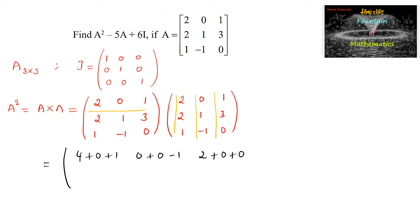Second row with first column: 2×2 + 1×2 + 3×1 = 4+2+3 = 9. Second row with second column: 2×0 + 1×1 + 3×(−1) = 0+1−3 = −2. Second row with third column: 2×1 + 1×3 + 3×0 = 2+3+0 = 5.